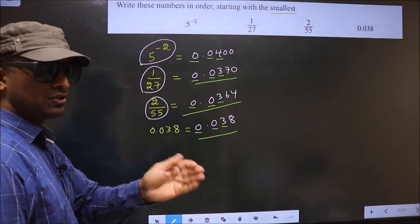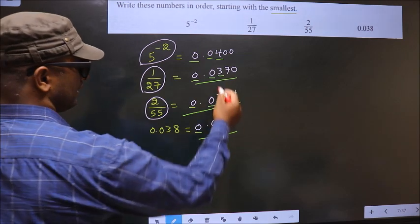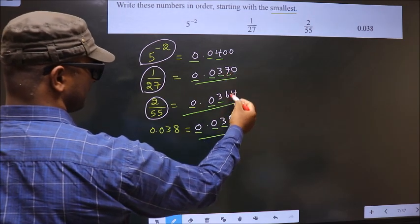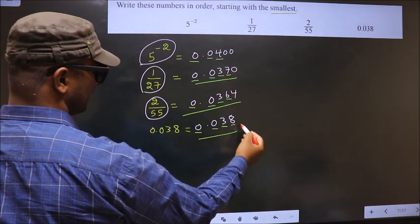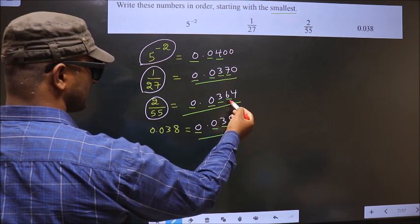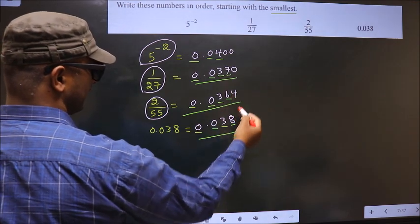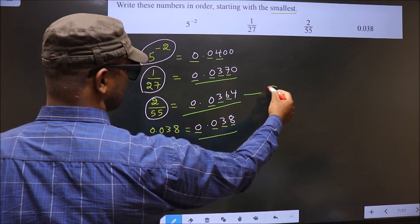To do that, we go to the next number. Next number is 7 here, here 6, here 8. So 6 is the smaller of 7 and 8. So this is the smallest of all.